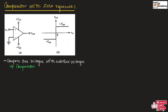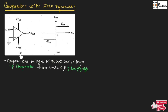This comparator has a two-state output, which means the output is either low voltage or high voltage.